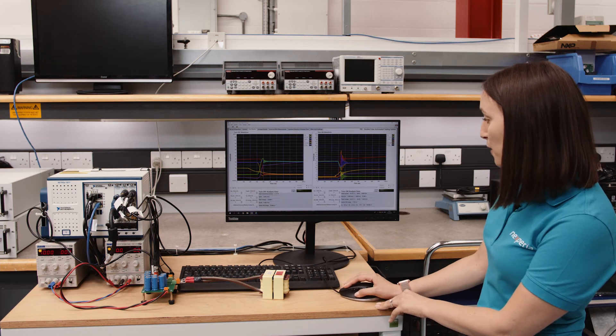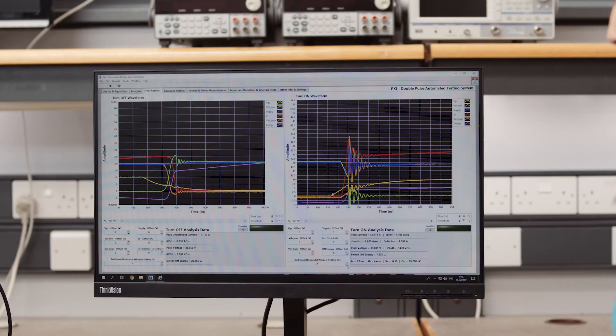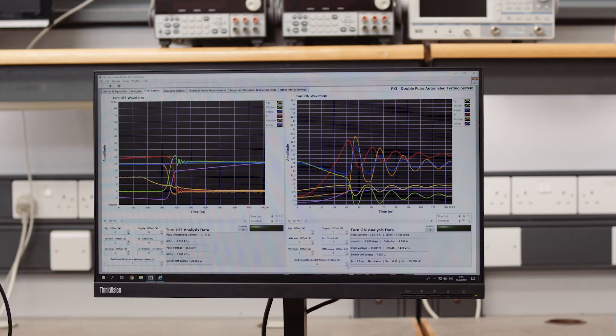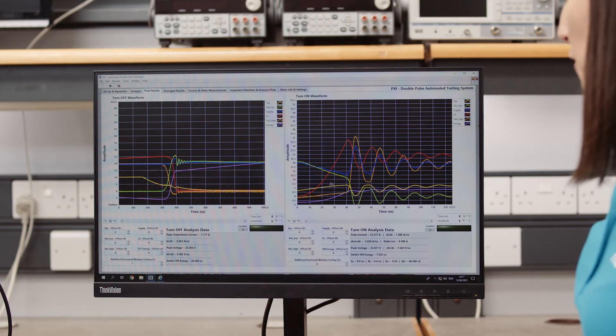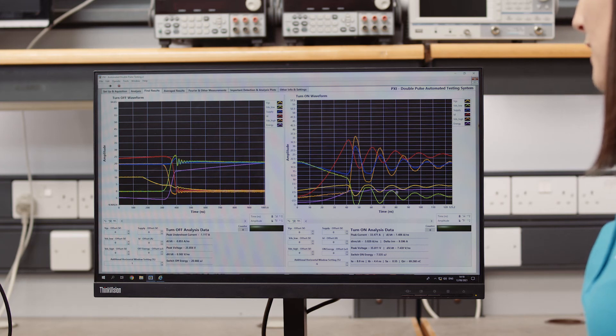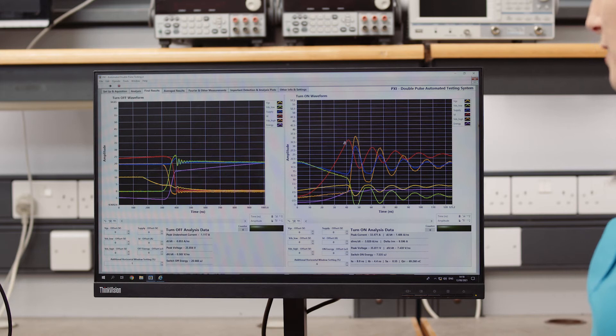If we zoom in a bit, we can distinguish better the waveforms. Here the green waveform is the low side VDS, the red waveform is the current, the orange waveform is the high side VDS, the blue is the DC link, the yellow is the gate waveform, and the purple waveform is the turn on switching energy.